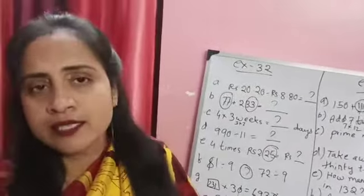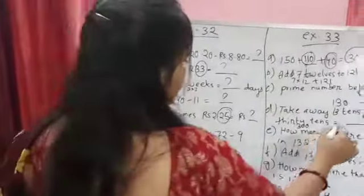Take away 13 tens from 30 tens. 13 tens means 130, and 30 tens means 300. So you have to take from 300, you have to take 130. So whatever the answer comes by subtracting, write it over here.